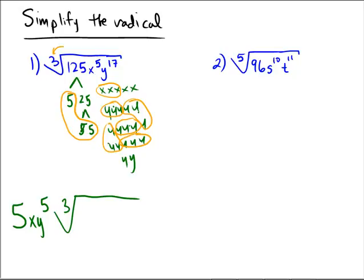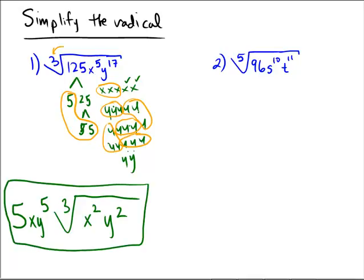What didn't escape from prison? Well there's a couple of x's left there, so we're going to be left with x squared, and there's a couple of y's right there, so we're left with y squared. No number part, but there's your answer: 5xy to the 5th cube root of x squared y squared.